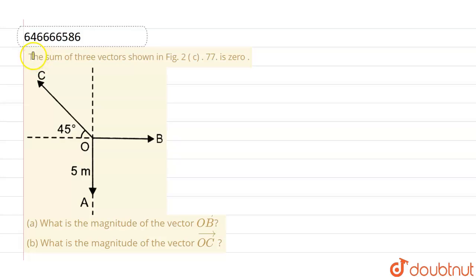Hello everyone, if we talk about this question, this given question is the sum of three vectors shown in the figure is zero. Now we have to find what is the magnitude of the vector OB and what is the magnitude of the vector OC.